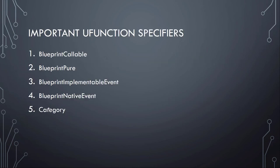Let's look at the most important function specifiers. Specifiers define how Blueprints can call C++ functions, how C++ can call Blueprint functions, and how these functions appear in Blueprint graphs - specifically how the nodes look with input and output parameters. The four most important specifiers are BlueprintCallable, BlueprintPure, BlueprintImplementableEvent, and BlueprintNativeEvent. Category, like with UProperties, defines where properties and functions appear. There are more specifiers and meta tags explained in the online documentation.